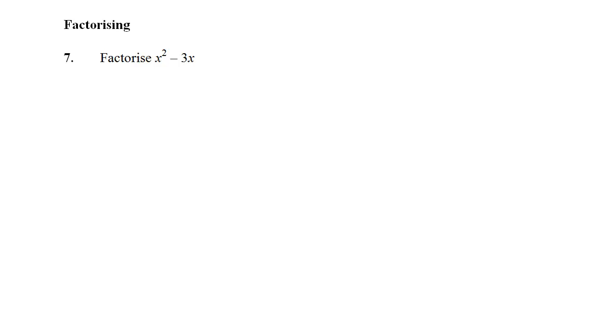So we start off with a fairly straightforward quadratic to factorize. It doesn't have a plus c term, it doesn't have a number at the end. And all these ones can be factorized by simply saying what goes into both terms. So what goes into x squared and 3x?